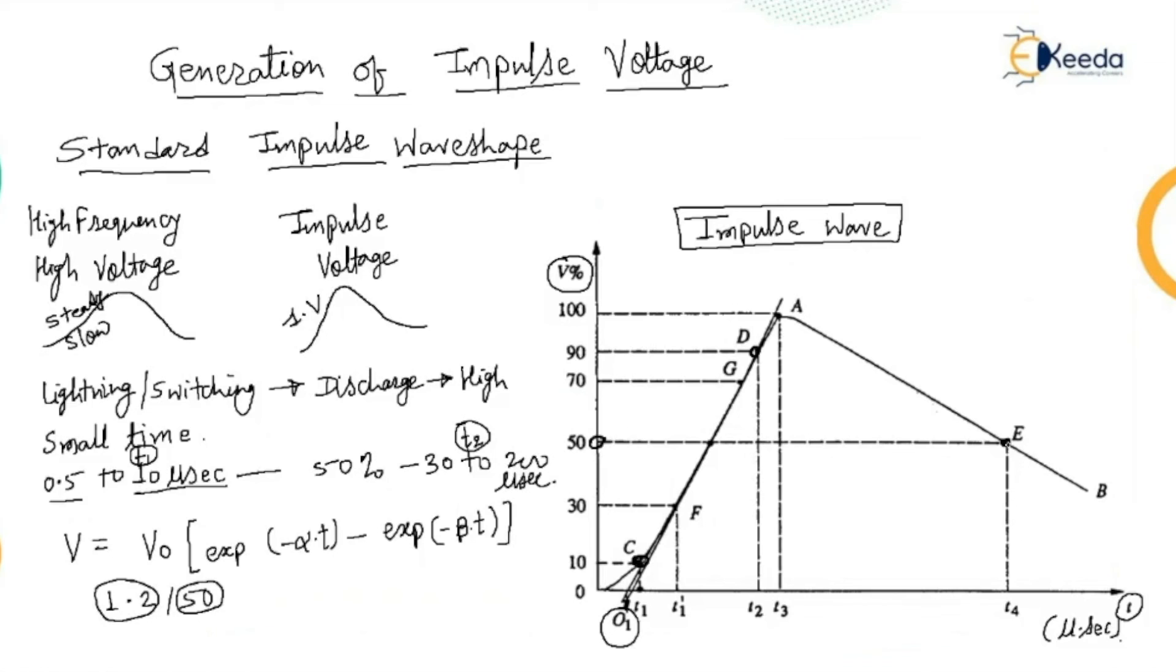In case the point C is not clear or missing from the waveshape record, the point corresponding to 30% peak value F is taken and its projection T1 dash is located on the time axis. So, this point gives me the T1 dash. The wave front time in that case will be defined as 1.67. So, the tolerances that can be allowed in front and tail times are respectively plus minus 13% or plus minus 20%.